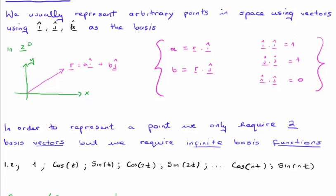However, in order to represent a point in space, in 2D space, we only require two basis vectors. But if we use cosines and sines, we require an infinite number of basis functions. And I've written them here. We know the cos of 0 is 1, the sin of 0 is 0, and thereafter we increment the frequency.